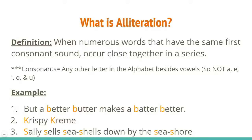Consonants are any letter in the alphabet that are not vowels. So it's every letter in the alphabet except A, E, I, O, and U.